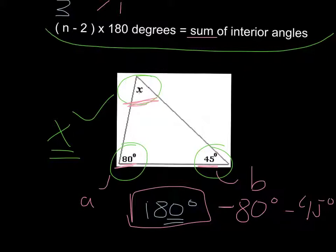So in this case, 180 minus 80 is 100, and then 100 minus 45 would be 55. So x would be 55 degrees. So that's how we can find the missing angle.